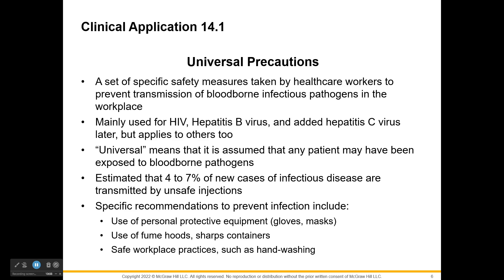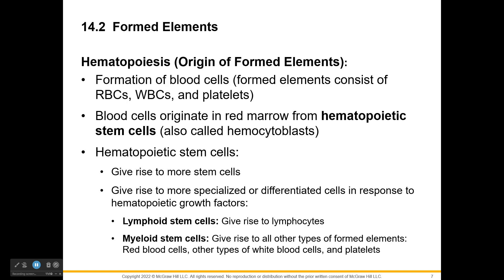Universal precautions are safety measures used to prevent transmission of blood-borne infectious diseases and pathogens in the workplace, mainly targeting HIV and hepatitis. The idea is to treat every patient as potentially exposed to a pathogen, protecting both patient and healthcare worker. Four to seven percent of new infectious diseases are estimated to result from unsafe injection practices. Protective measures include gloves, masks, fume hoods, sharps containers, keeping areas clean, and handwashing.